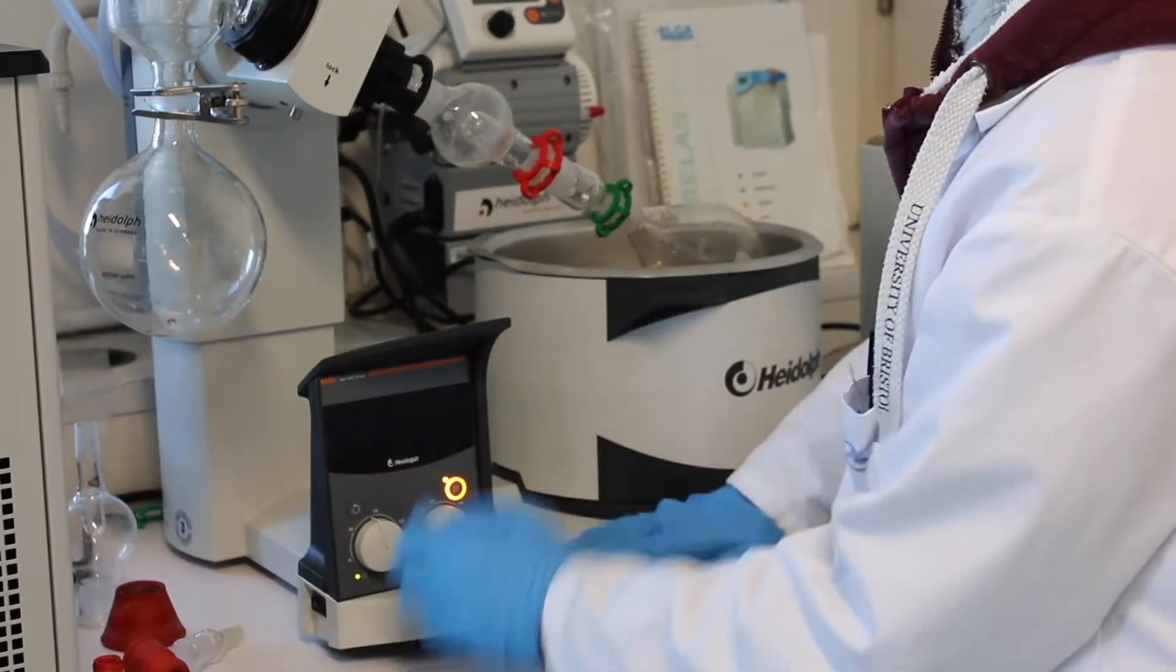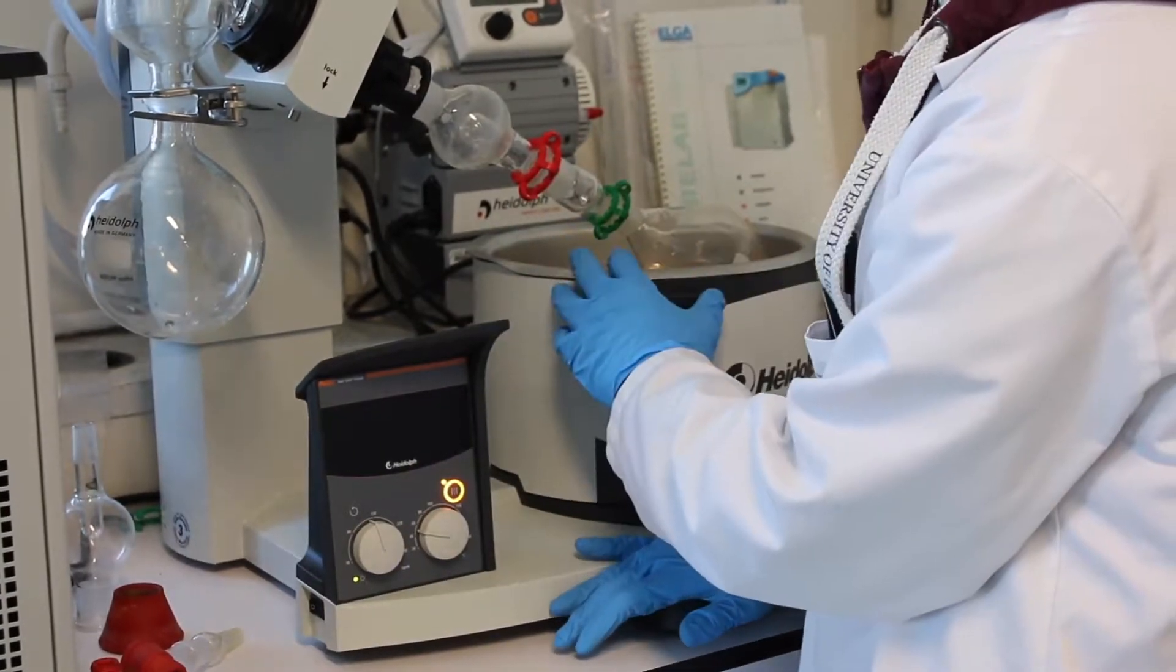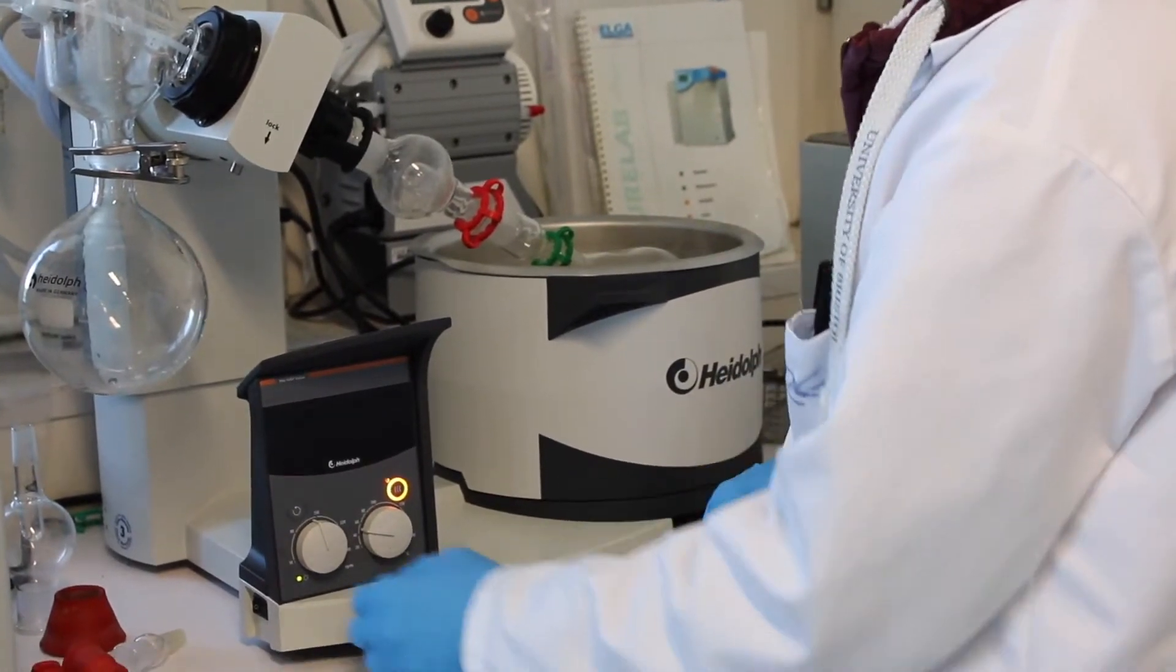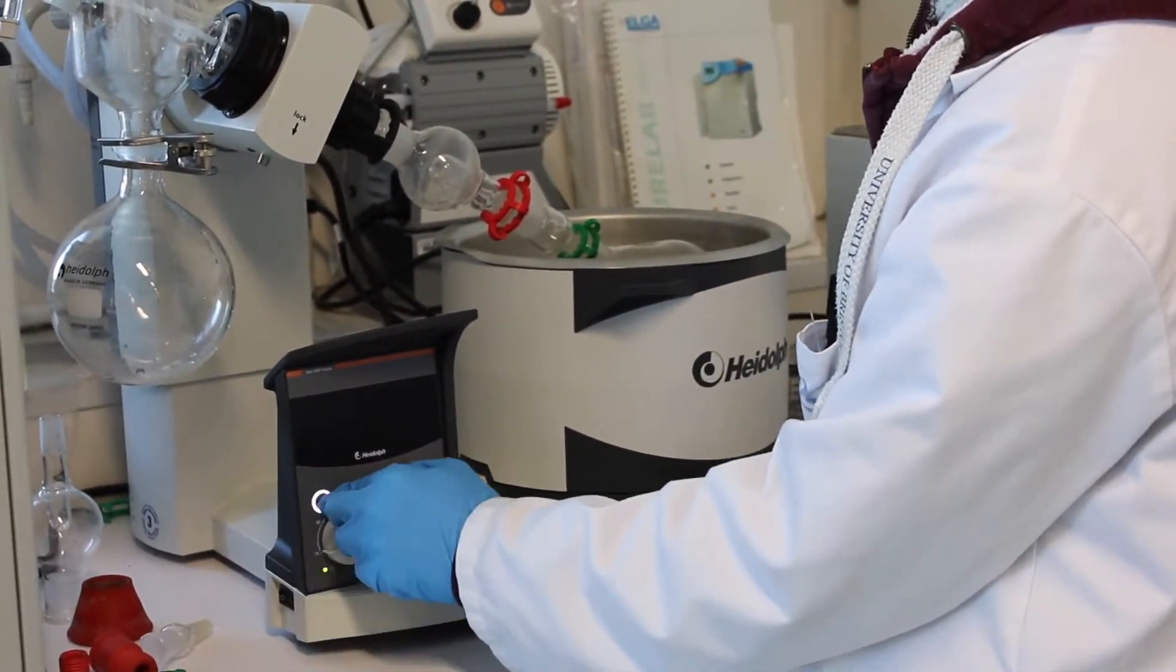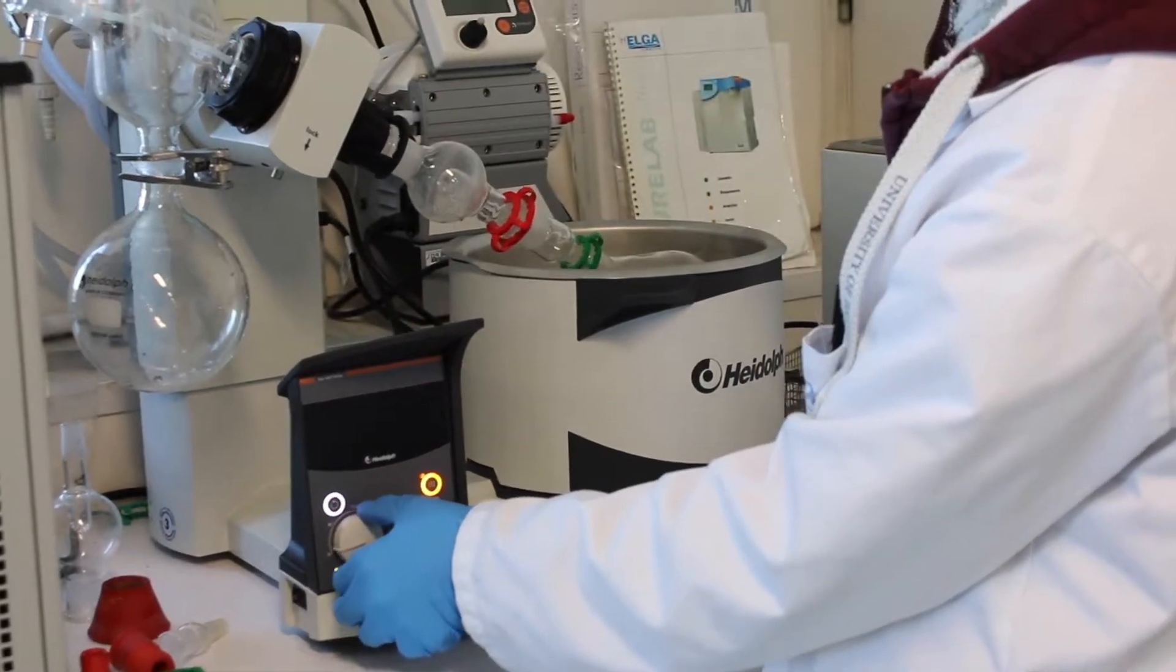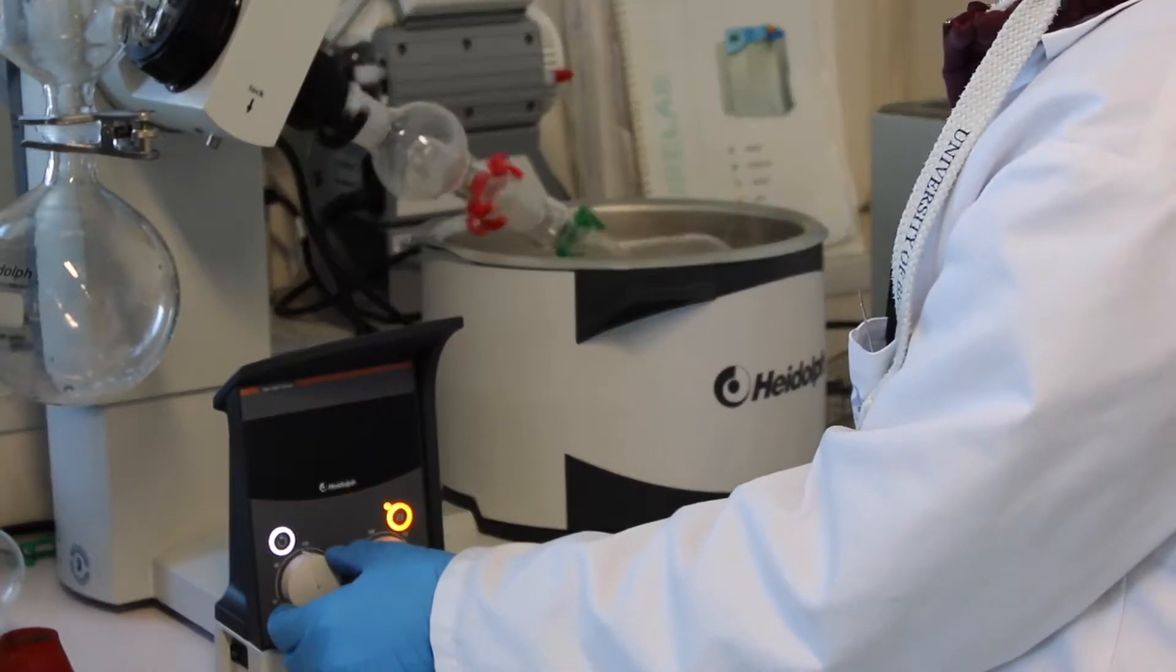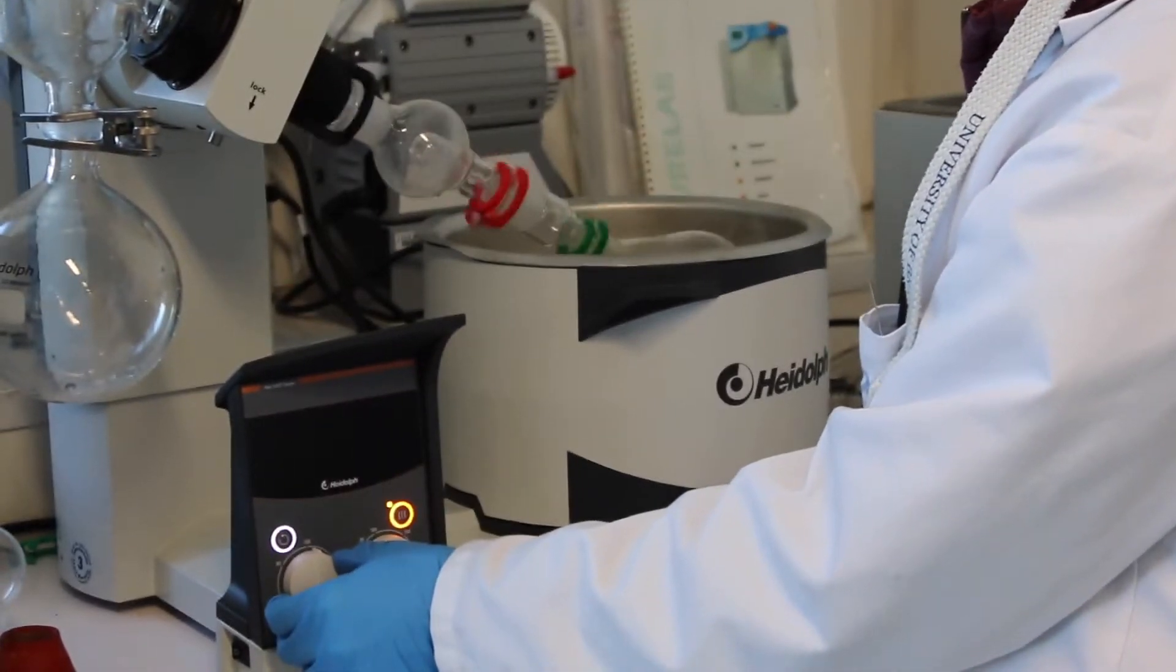You want to lower the flask into the water bath. In order to do that, you use this handle here. And you turn on the spinning motion. You want a nice and fast spinning such as this one.